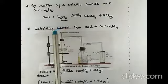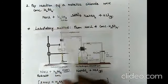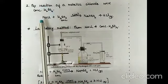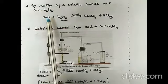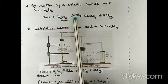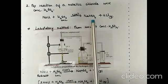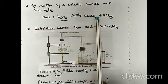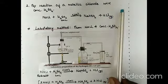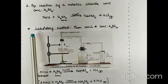Another method of preparing hydrogen chloride gas is by the reaction of a metallic chloride with concentrated sulfuric acid. Sodium chloride is taken as an example. When heated to below 200°C, sodium chloride reacts with concentrated sulfuric acid to form sodium bisulfate (sodium hydrogen sulfate) and hydrogen chloride gas.